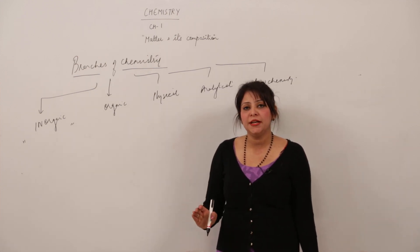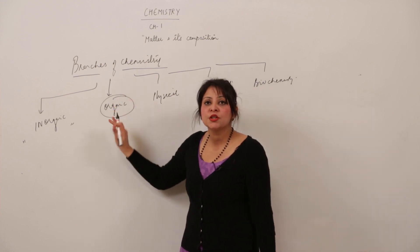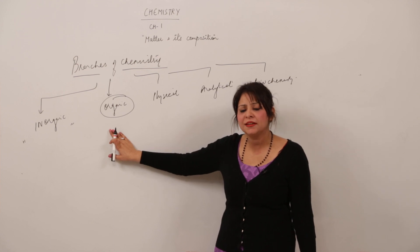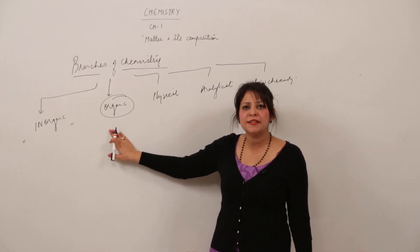We have a separate branch to study carbon, which is organic chemistry. Organic chemistry deals with the study of carbon and its compounds. It may contain some other elements in traces, but the main constituent is carbon.